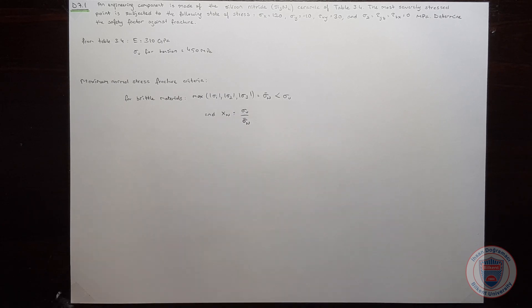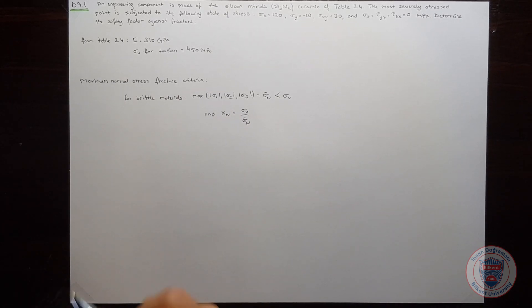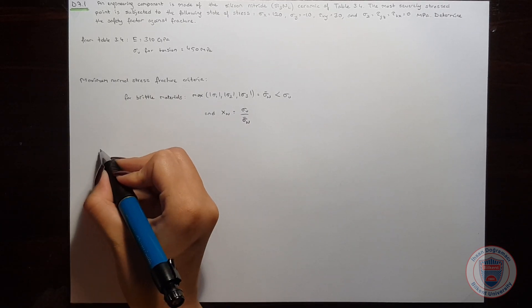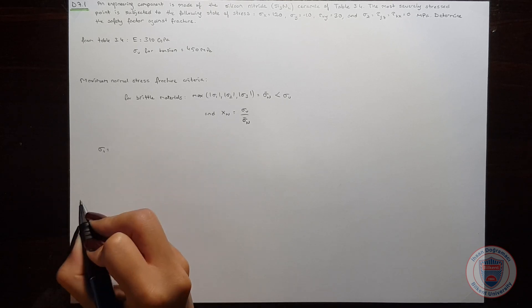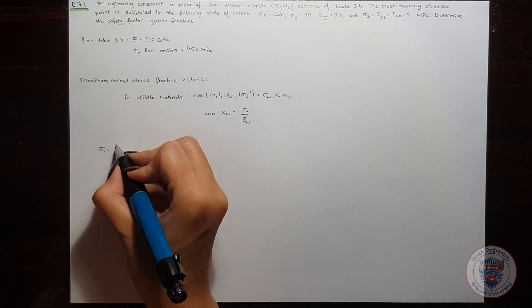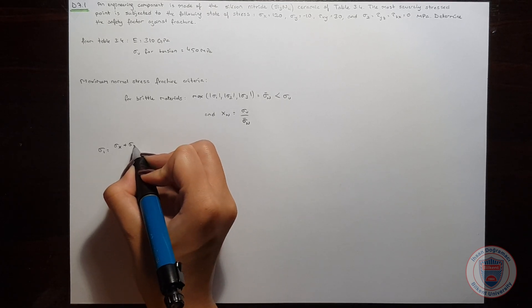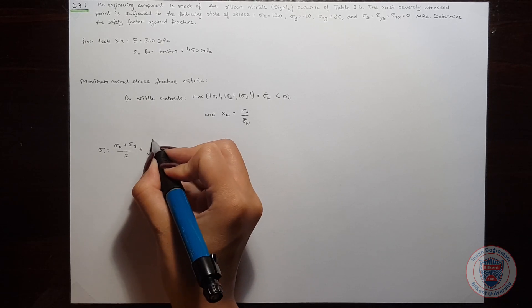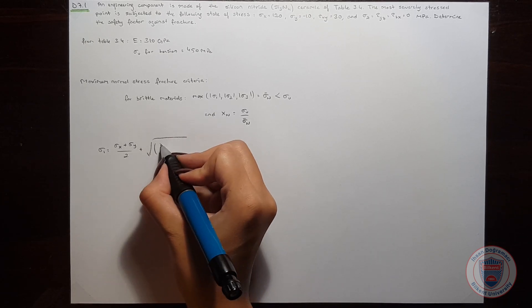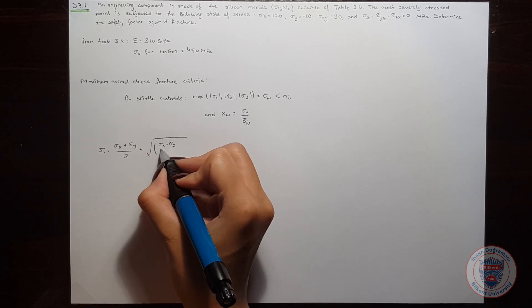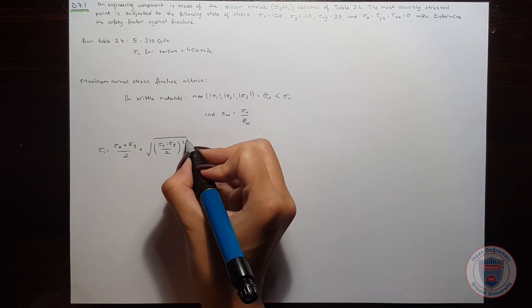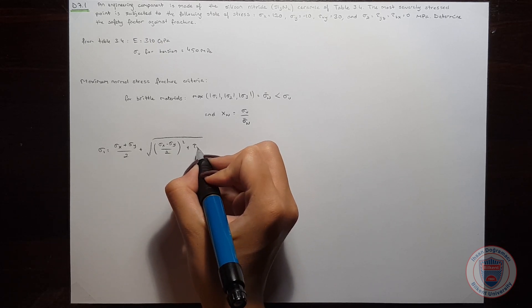So let's calculate the principal normal stresses. We know that sigma 1 will be equal to sigma x plus sigma y over 2 plus the square root of sigma x minus sigma y over 2 squared plus tau xy squared.